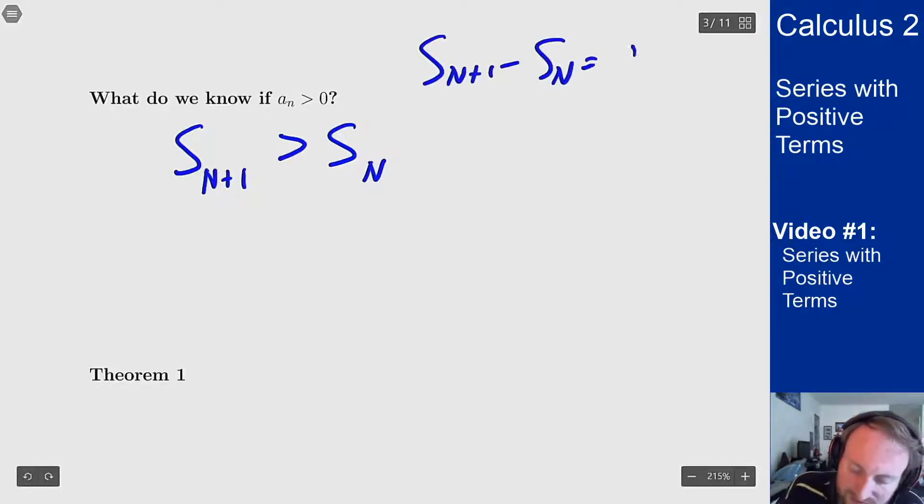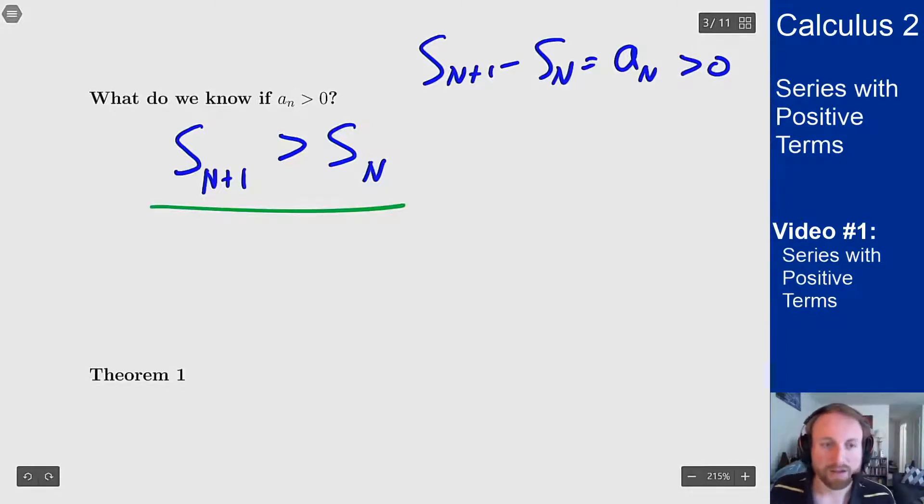The difference here is exactly a_n, but I know that's positive which means I have this set up here that my n plus first partial sum is always bigger than my nth partial sum. And so the way we can state that is the sequence of partial sums is increasing.